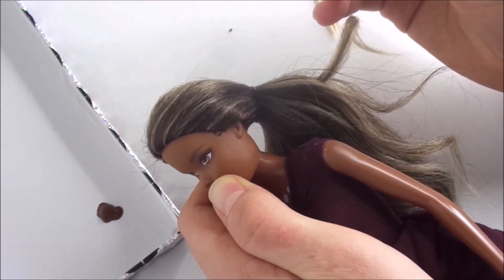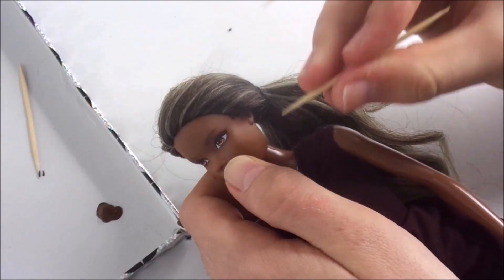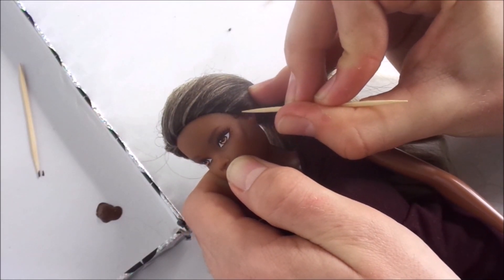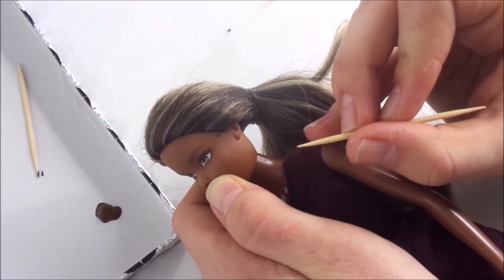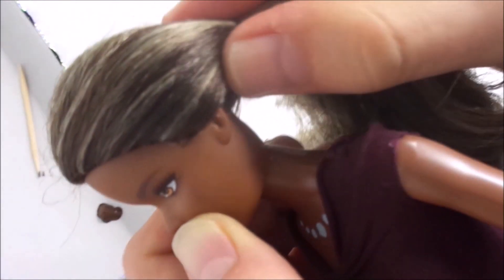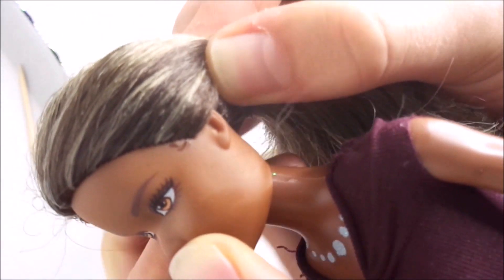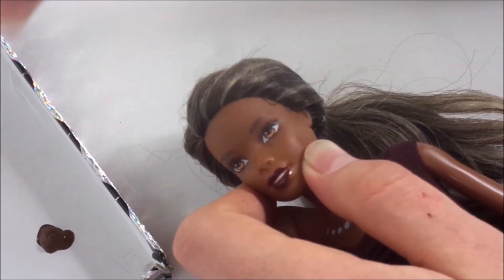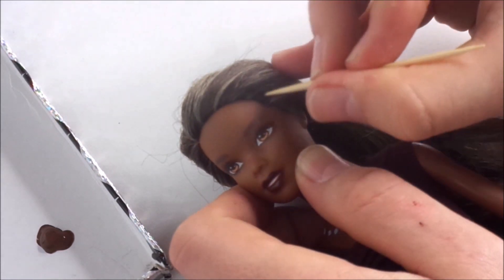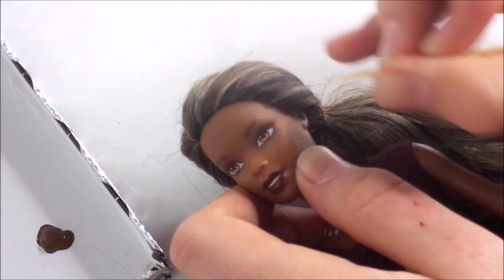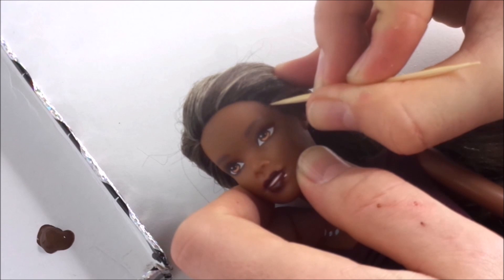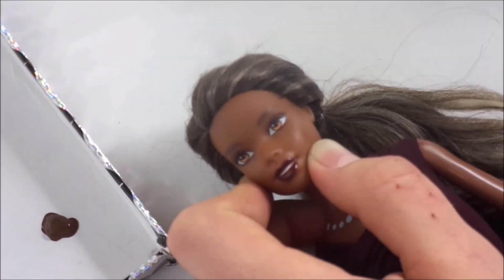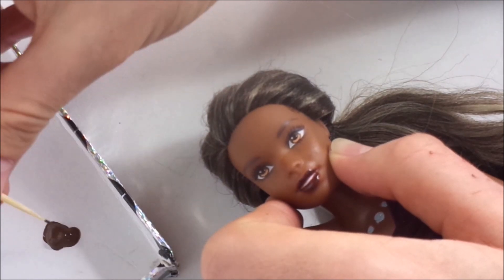And then I take a clean toothpick and drag that through the paint to help give it more of a hair texture. So I just start by painting one swoop and then I'm breaking it up with that clean toothpick so that it looks like every swoop is made up of multiple strands of hair. So far I've only done these two classic swoops.